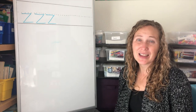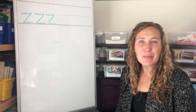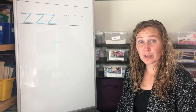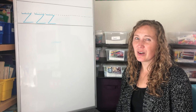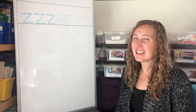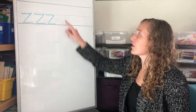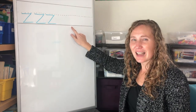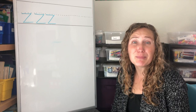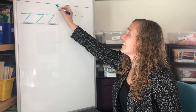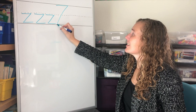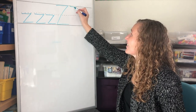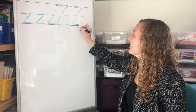Good job! Now let's make the uppercase Z. That's used for very important words like names — Zoe or Zane. The uppercase Z goes between the top solid line and the bottom solid line. Let's do a bigger zigzag: one, two, three. Let's do it again: one, two, three.